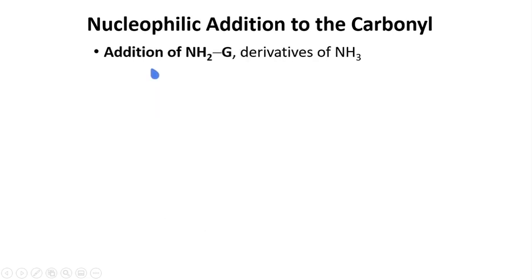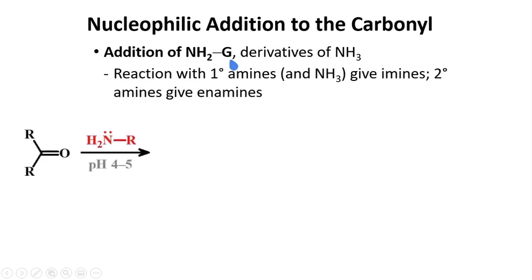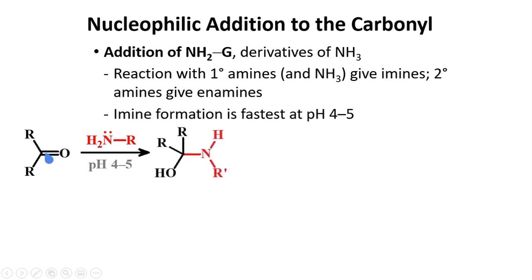Another nucleophilic addition to the carbonyl is the addition of derivatives of ammonia. The G group here can be a variety of several groups. The reaction with primary amines and ammonia gives imines. Primary amines are those compounds wherein your nitrogen is directly bonded to only one carbon. In this case, the lone pair of nitrogen can attack the carbonyl carbon and you will form this type of compound.